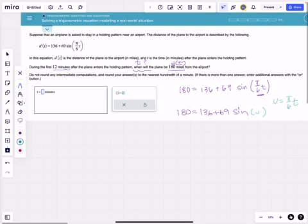Alright, so let's go ahead and solve for u. First thing we would want to do is isolate the trig function, so we're going to subtract that 136 to the other side, and then we would divide by 69. Now if we subtract the 136 to the left-hand side, we would end up with 44, and then if we divide by 69, we would just get 44 over 69 is equal to the sine of u.